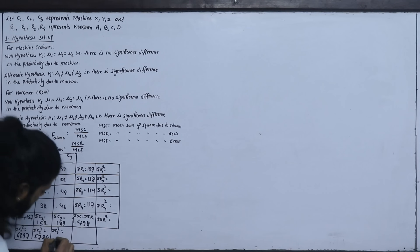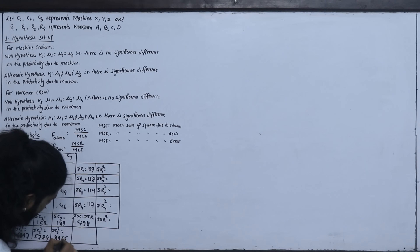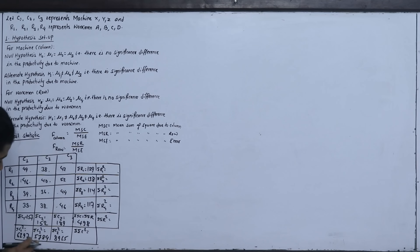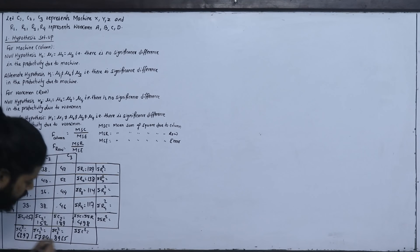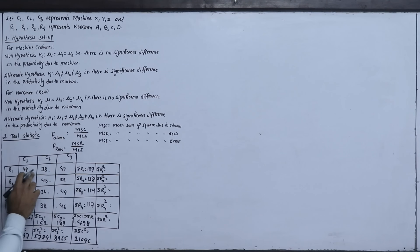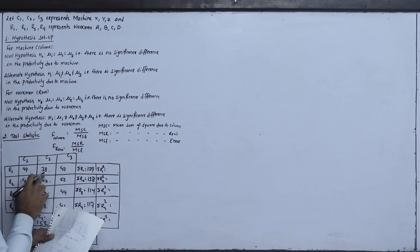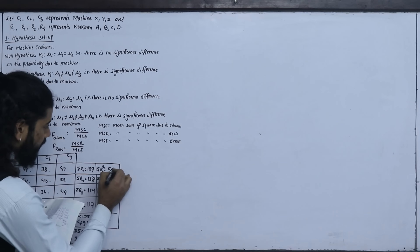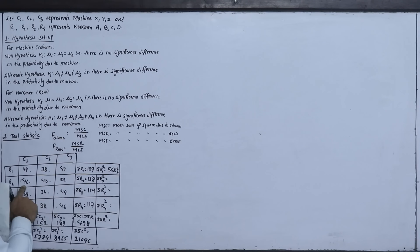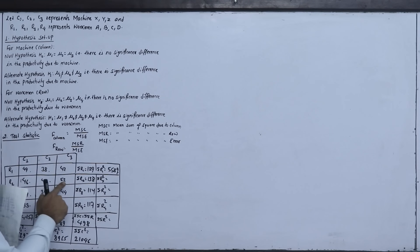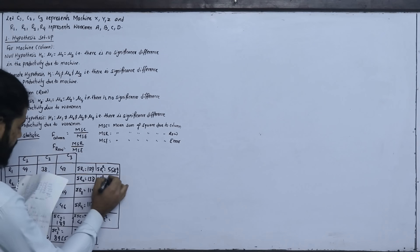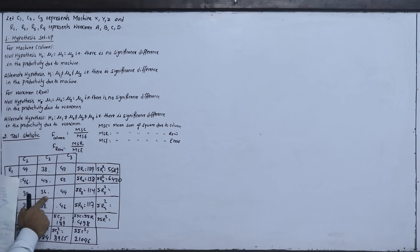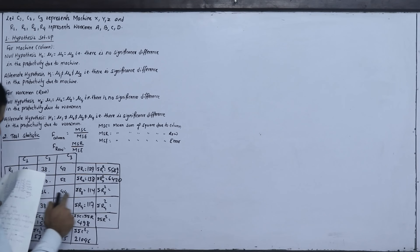Summation of all squared values: 6297 + 5784 + 8965 = 21046. This is the total summation of all individual squared values, equal to 21046.